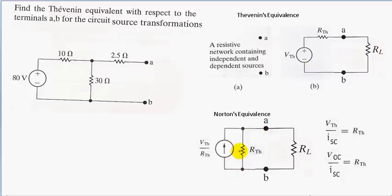This idea is that we're using source transformation — transforming a voltage source in series with a resistor into a current source in parallel with the resistor.